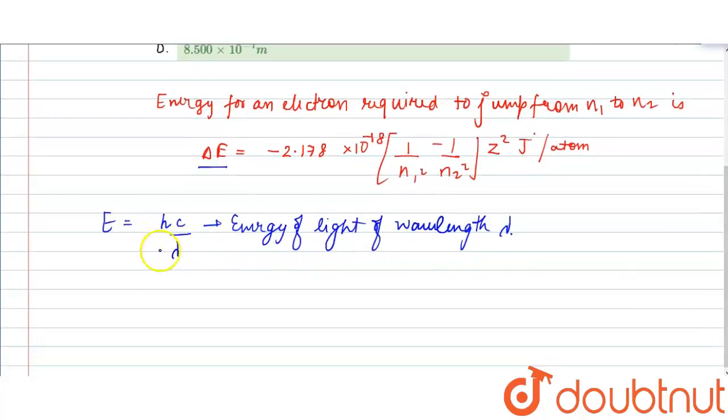This energy is required to excite the electron. Therefore, we can equate these two equations: hc by lambda equals delta E, which is minus 2.178 times 10 to the minus 18 (1 by n1 squared minus 1 by n2 squared). Here z equals 1 for hydrogen atom, joules per atom.